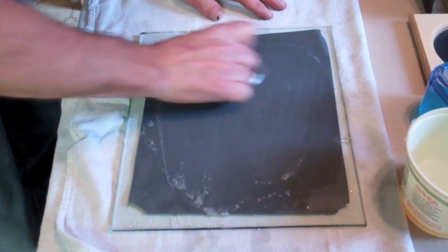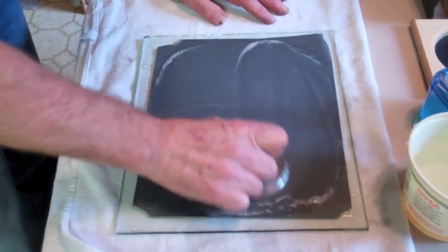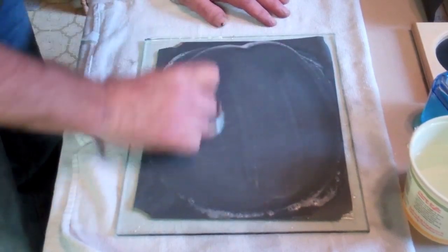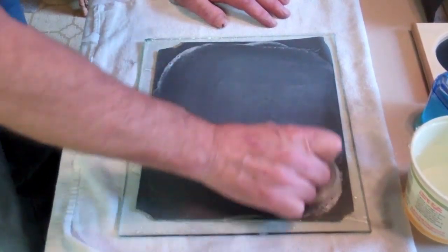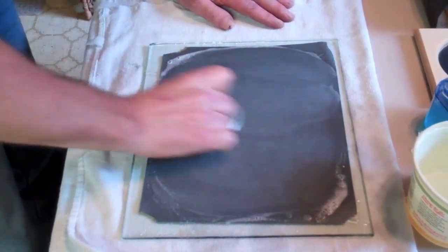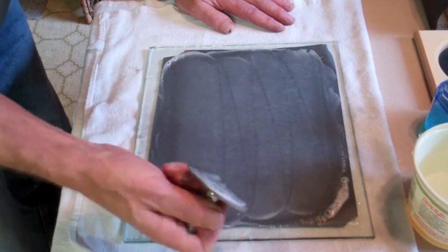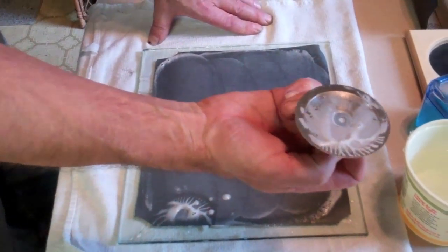You're going to take this by the handle and you're going to start sharpening. You go back and forth, back and forth, circles, back and forth, up and down, back all over. Just use the whole piece of sandpaper.